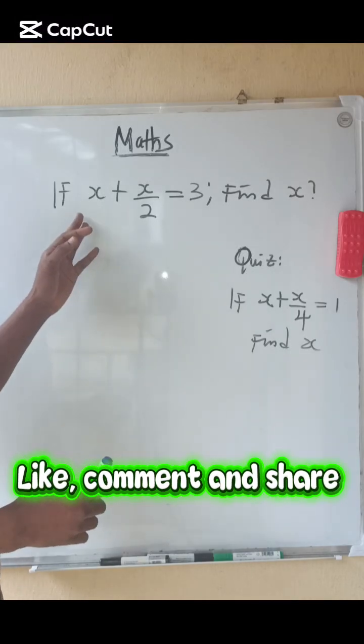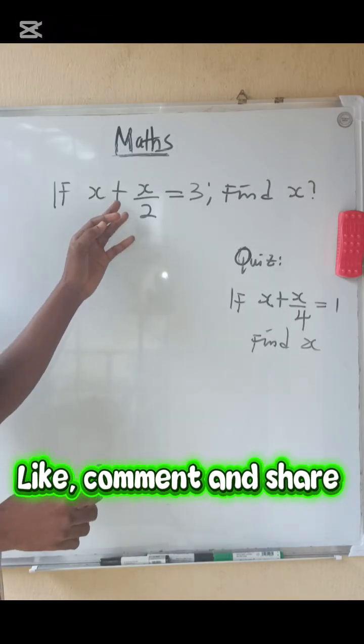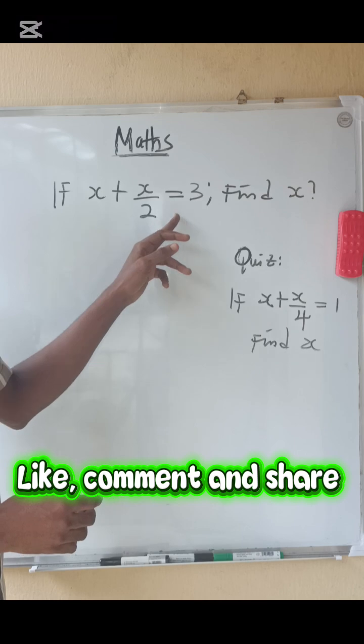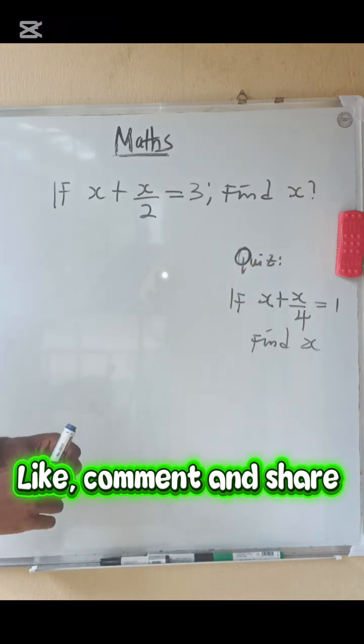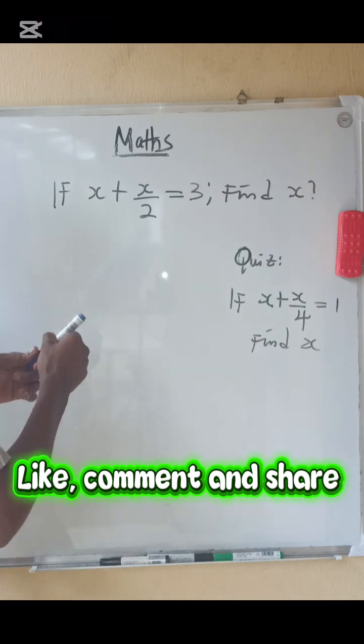If x plus x over 2 equals 3, find x. Very simple, so what do we do? Our solution.